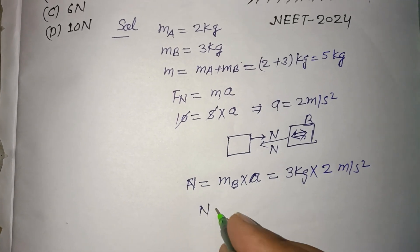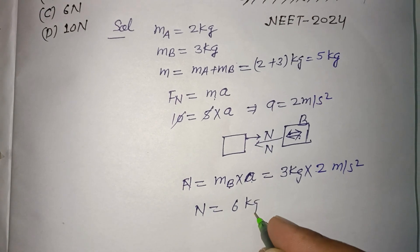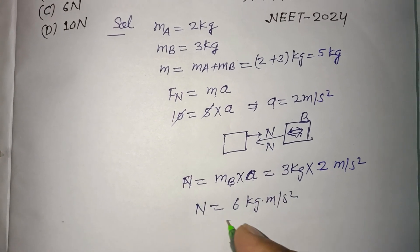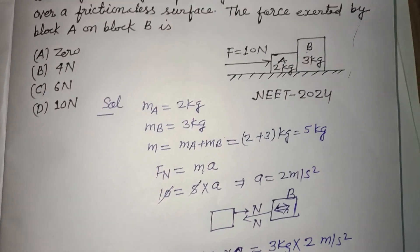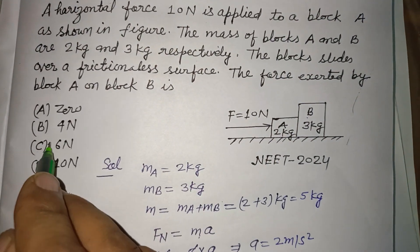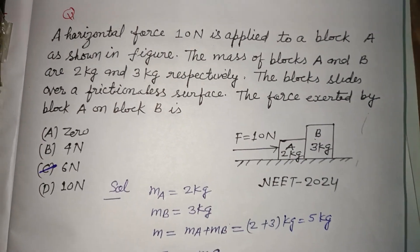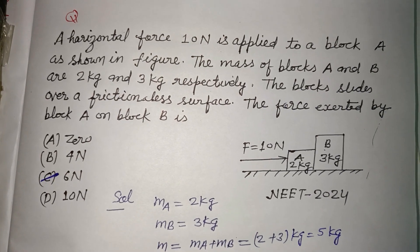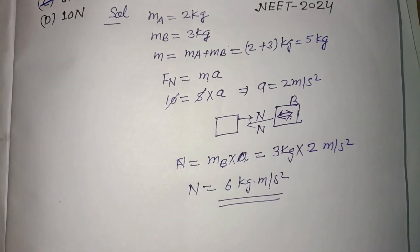Therefore, N equals 3 times 2, which is 6 kg·m/s², that is 6 N. This is the correct answer, found in option C. So option C is correct. I hope you got it — please like the video, subscribe the channel, thanks for watching.